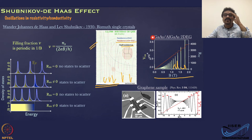The filling fraction ν is periodic in 1/B, given by n_s·(2e/h)·(1/B). If you plot these oscillations versus B, they are not periodic, but if you plot versus 1/B, the oscillations become periodic. As you increase B, you go from no Landau levels (continuum) to three Landau levels, to about two-and-a-half, then two, and finally one.